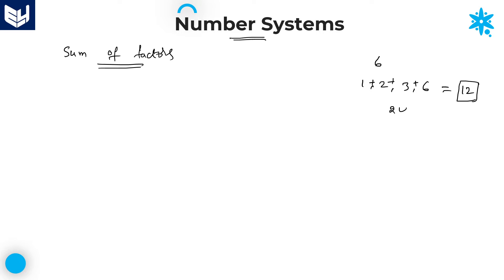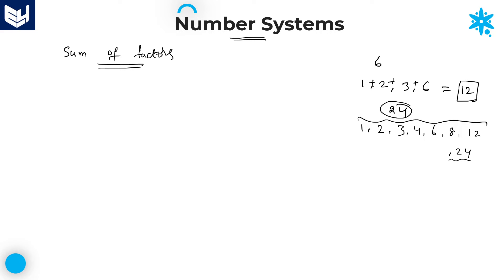Suppose the number is 24 — the factors are 1, 2, 3, 4, 6, 8, 12, and 24. We need to add all these numbers. Whenever we calculate the number of factors for big numbers — even for 24 itself we are getting almost 8 factors — adding all the factors is a little bit difficult. So in order to avoid that, we have a separate formula to calculate the sum of factors for any number in the simplest way.